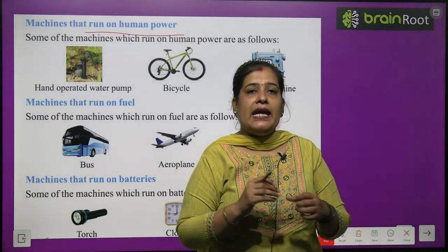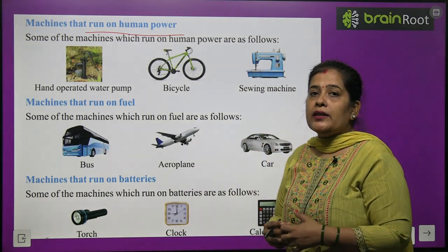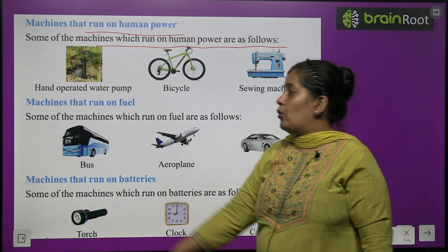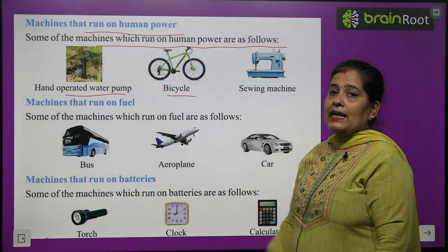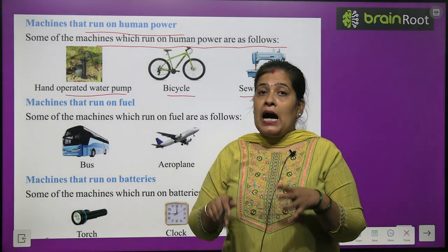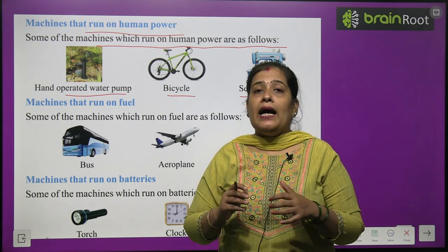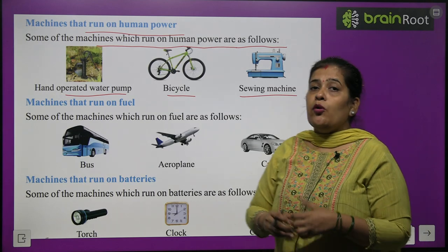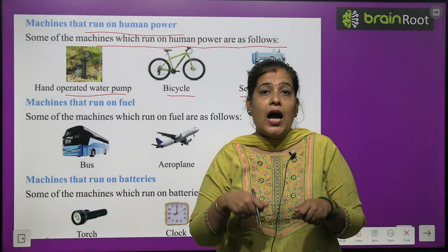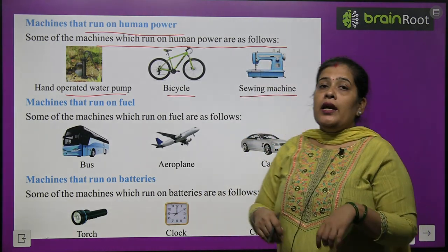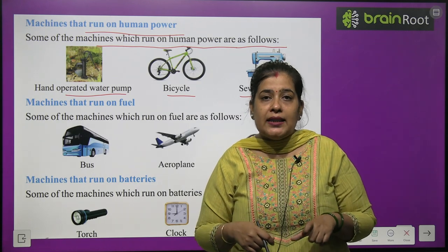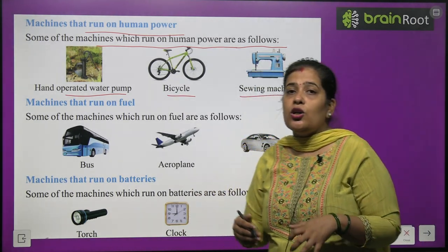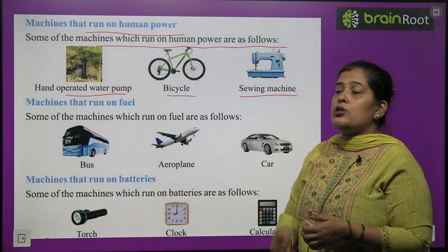Machines that run on human power — kuch machines ko chalne mein human power ki zaroorat padti hai. Some of the machines which run on human power are: hand-operated water pump, bicycle, and sewing machine. Matlab nalkaa — pehle har ghar mein hand pump hota tha. Bicycle — jab aap park mein cycle chalate hain toh aapko taakat lagani padti hai. And the sewing machine — jis par tailor kapde silta hai, us machine ko mama operate karti hain, matlab human power ki zaroorat padti hai.